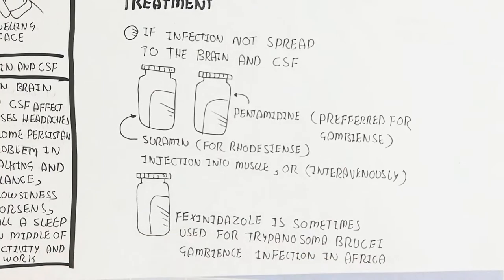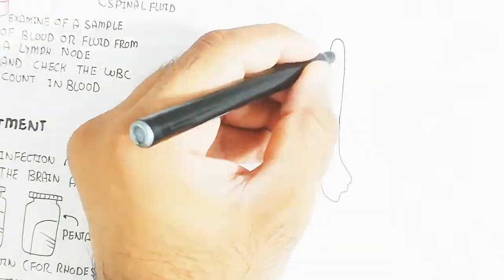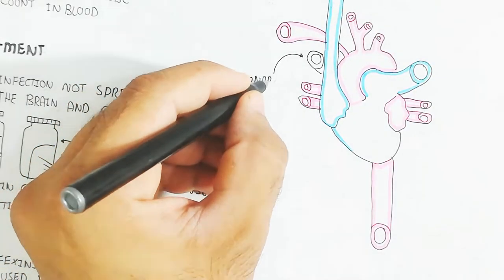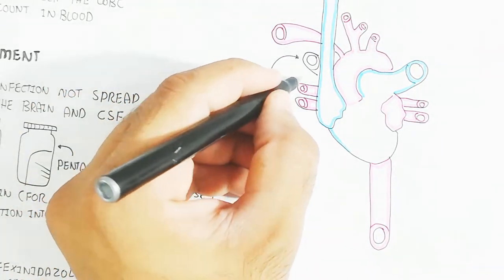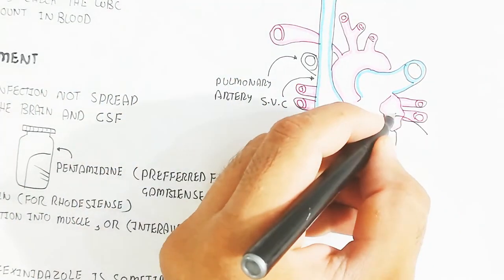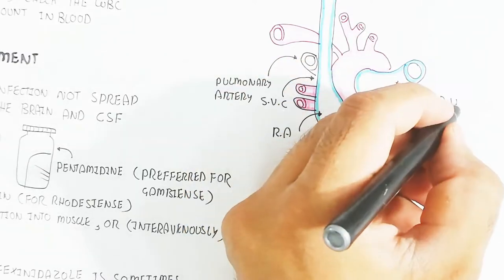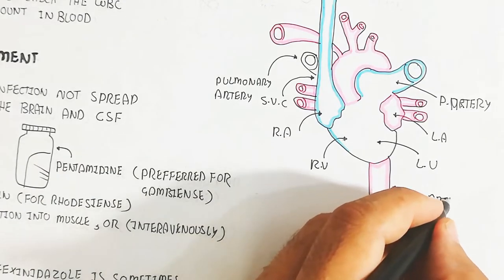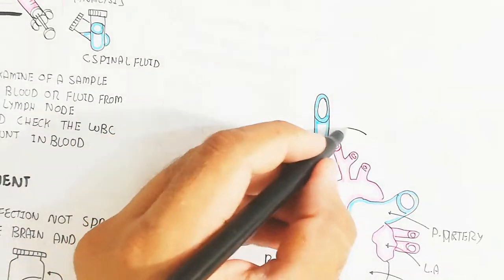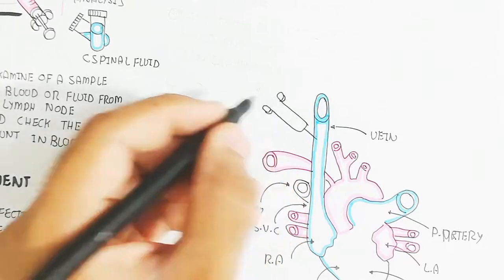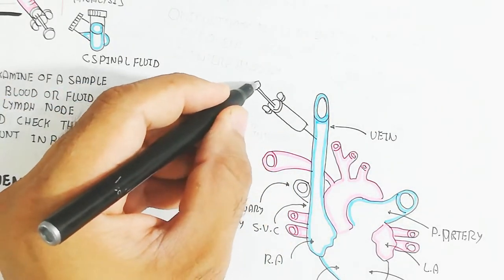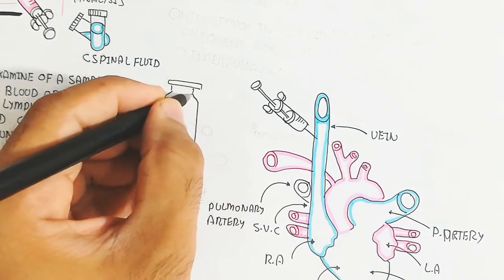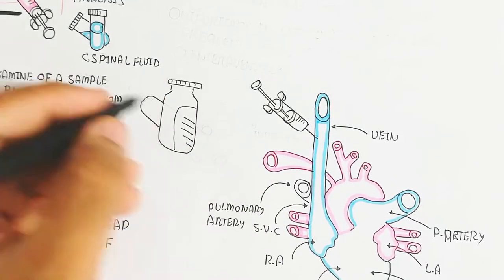Let's understand what intravenous means. Here is the heart, showing the pulmonary artery and pulmonary vein, right atrium to left atrium, and right ventricle and left ventricle. The vein is shown in blue color while the artery is shown in red color. Intravenous means inside the vein, where we can inject the drug as an injection for treatment.